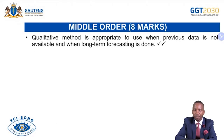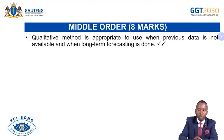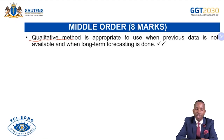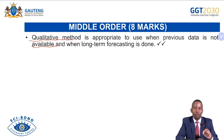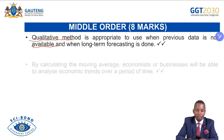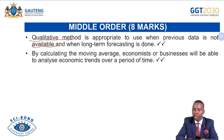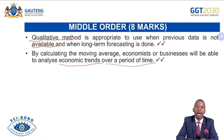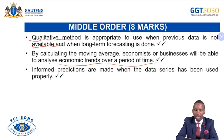By calculating moving averages, economists get a clear picture of general trends of business cycles and can predict future economic performance. Economists, businesses, and government authorities use moving averages to extrapolate from known facts to discover unknown information. Informed predictions are made when the data series is used properly.